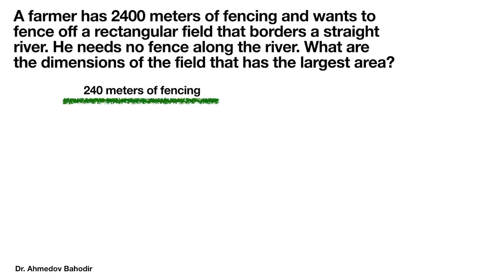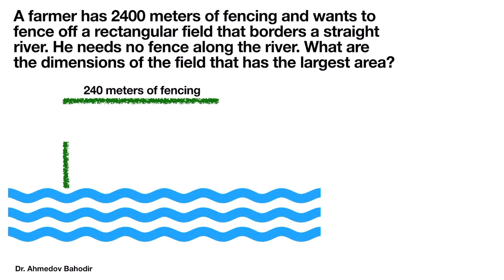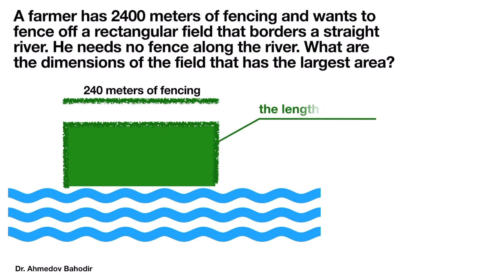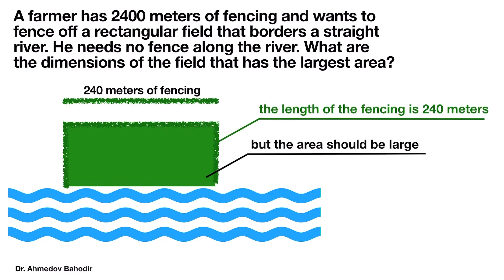Hi, my name is Boghater Achmedev. In this video lecture we are going to solve a maximization problem using derivatives. A farmer has 2400 meters of fencing and wants to fence off a rectangular field. How does he choose the dimensions of this field in order to get the largest area?